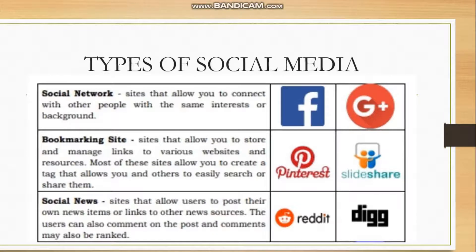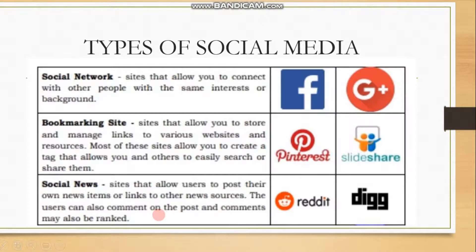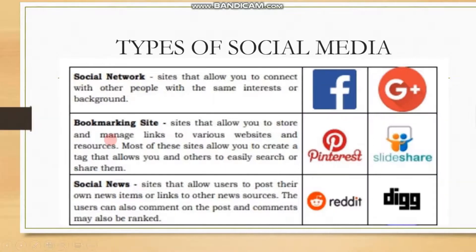What are the types of social media? The first one is called a social network — these are sites that allow you to connect with other people with the same interests or background, such as Facebook and Google+. Next, you have bookmarking sites — these are sites that allow you to store and manage links to various websites and resources. Most of these sites allow you to create tags that let you and others easily search or share them, such as Pinterest and SlideShare.